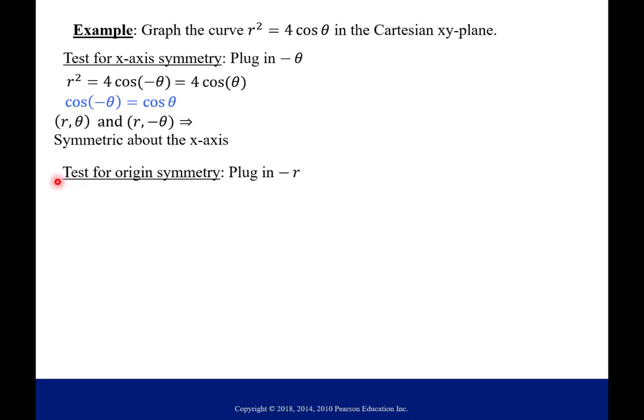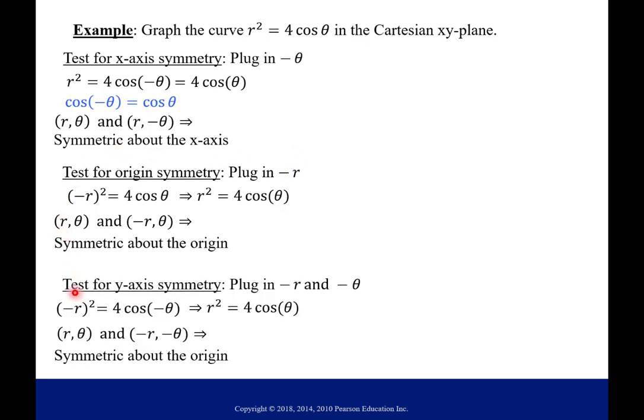Now let's do origin symmetry. This time we plug in -r into our original equation and we simplify. And when you square something negative, it turns positive. And this brings us back to our original equation again. And so (-r, θ) is also on our graph. And so our graph is symmetric about the origin. Now you could also test for y-axis symmetry, but both of these together, because they both worked as far as symmetry goes, it implies the y-axis symmetry. So the points (-r, -θ) are on our graph as well.